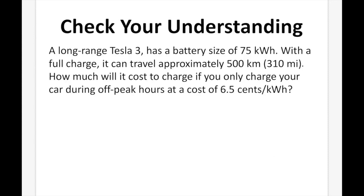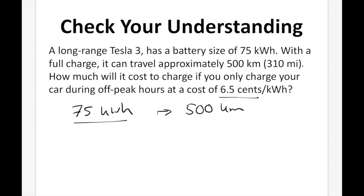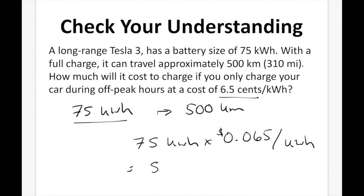Check your understanding. A long-range Tesla Model 3 has a battery size of 75 kilowatt hours. With a full charge, it can travel approximately 500 kilometers. How much will it cost to charge if you only charge during off-peak hours at a cost of 6.5 cents per kilowatt hour? We know the battery is 75 kilowatt hours. So: 75 kWh × $0.065 per kWh = $4.88 for a full charge. That's pretty incredible.